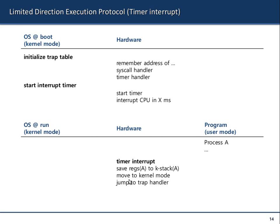These are the steps that happen when the interrupt timer is triggered. It's like a countdown timer. You save the registers of A to the kernel stack of A, then move to kernel mode, and the kernel mode takes over.